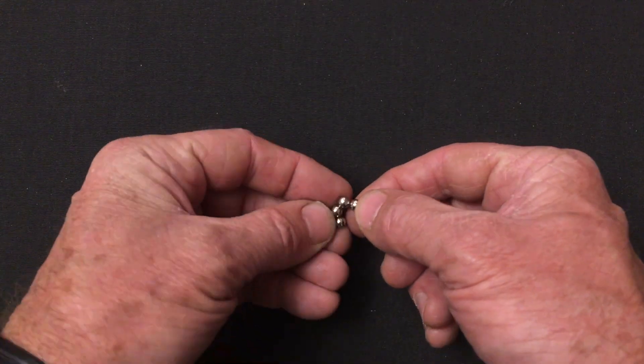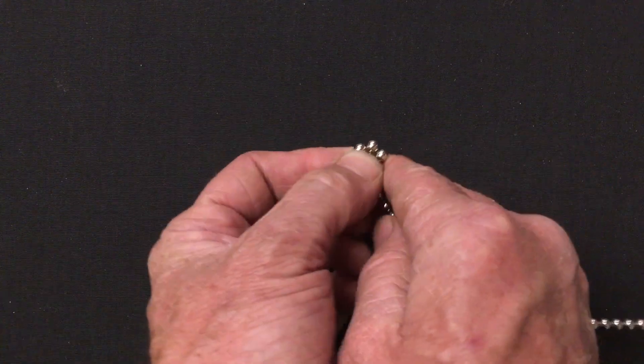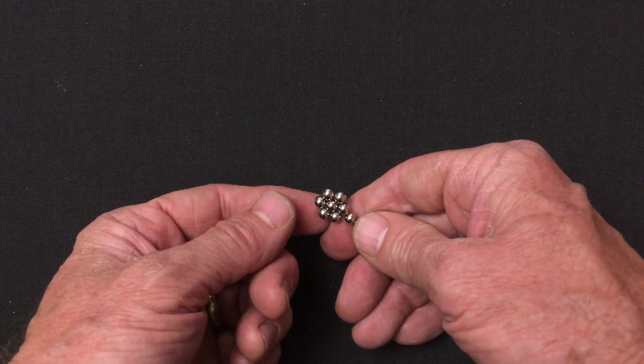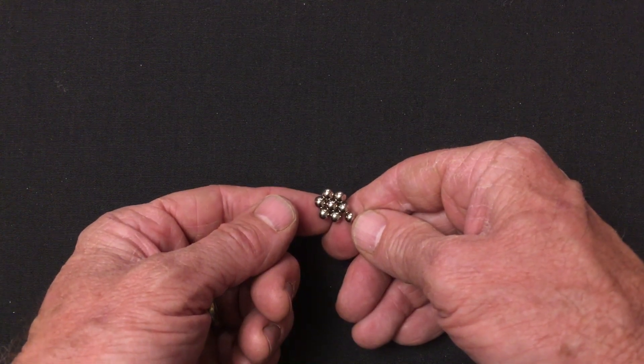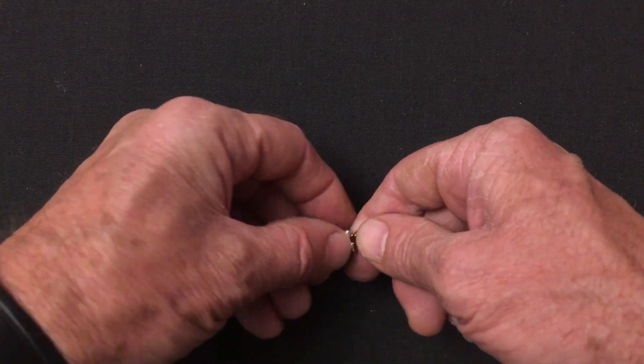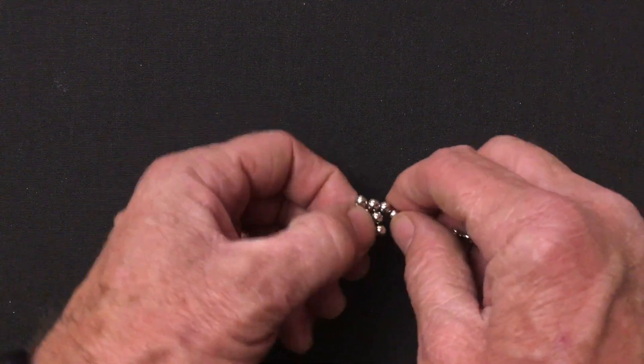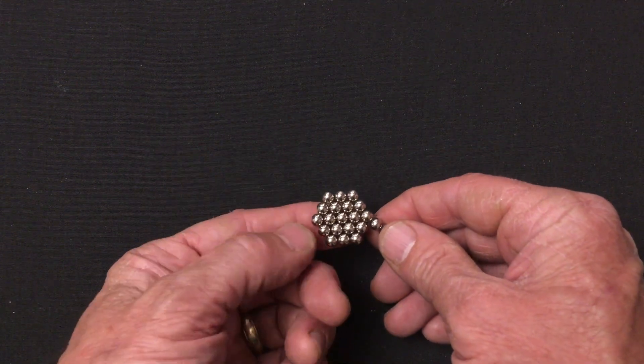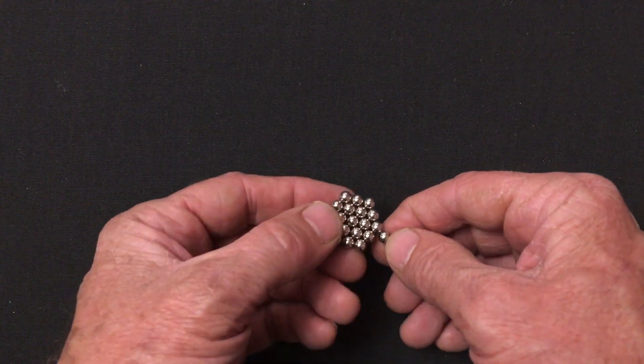To build a two by five I make a filled hexagon. It's a six magnet hexagon filled with a magnet in the center. Then I wind another ring around that hexagon. That's what I call a three by three hexagon.